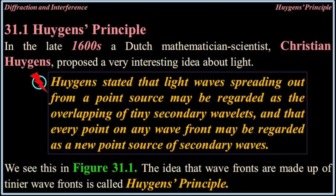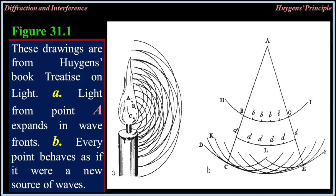Huygens' Principle. In the late 1600s, a Dutch mathematician-scientist, Christiaan Huygens, proposed a very interesting idea about light. Huygens stated that light waves spreading out from a point source may be regarded as the overlapping of tiny secondary wavelets, and that every point on any wave front may be regarded as a new point source of secondary waves. The idea that wave fronts are made up of tinier wave fronts is called Huygens' Principle.